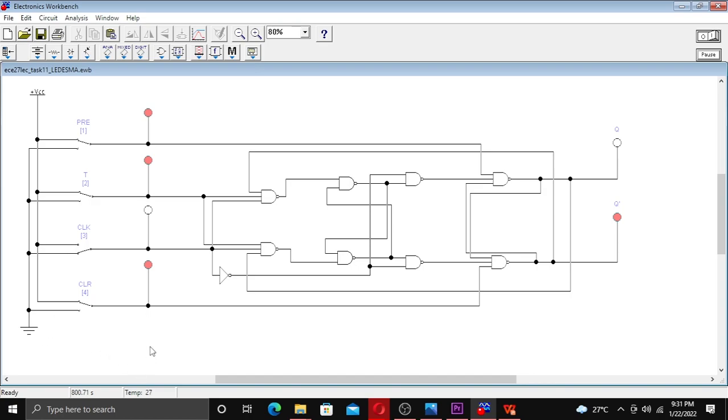If we base on the truth table, if we toggle on the switch, we press the toggle. On the clock, we press the present. If we toggle, it stays to the present output.